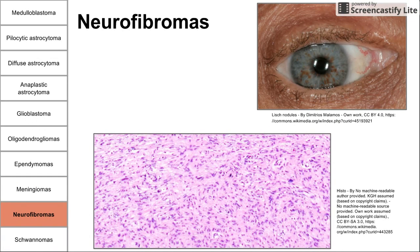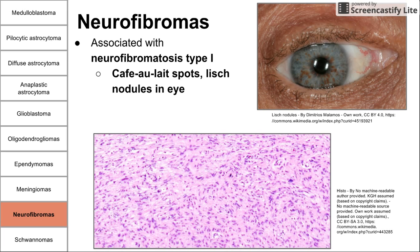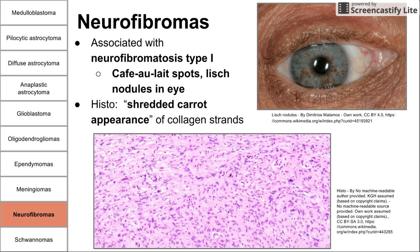Next is neurofibroma, the first of two peripheral tumors. This is associated with neurofibromatosis type 1 genetic disorder. Characteristic lesions across the body include café au lait spots, which are areas of hyperpigmentation, and Lisch nodules that appear in the eye as petal-like formations in the iris. On histology, you see a shredded carrot appearance — collagen strands in the fibroma that look like shredded carrots.